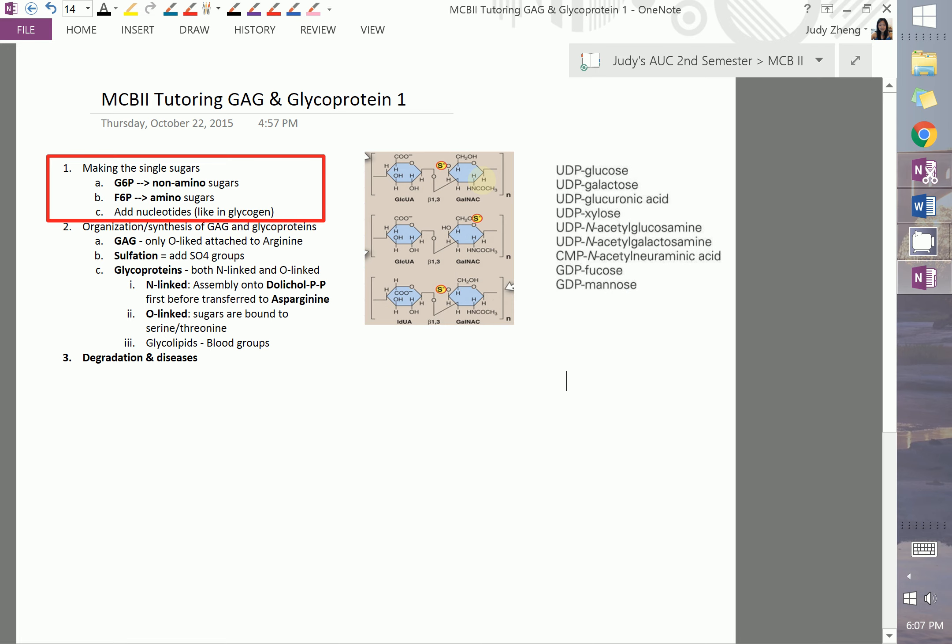Hi, this is MCB2 Tutoring. In this video I'm going to talk about GAGs, which is short for glycosaminoglycans and glycoproteins. Basically, these are various protein molecules with chains of sugar added onto them. We're going to talk about more specifically the organization of these sugar chains and how they're attached.